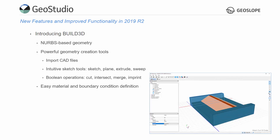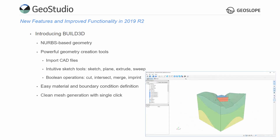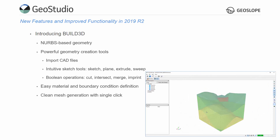Materials and boundary conditions are easily applied to bodies, faces, edges, and vertices by simply changing the associated properties in the Properties window. Build3D generates a clean mesh with a single click of the button, removing the need to spend hours on manual mesh adjustments.